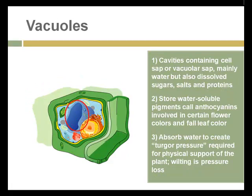Vacuoles are little cavities that contain the cell sap — mainly water, but also holding sugar, salt, and proteins. These are the materials that the cells use to replenish and rebuild themselves. Importantly for plants, they hold pigments involved in flower colors and fall leaf color. They can also absorb water to maintain pressure — if this pressure drops and water is lost in the cell, wilting and eventual death of the plant will result.